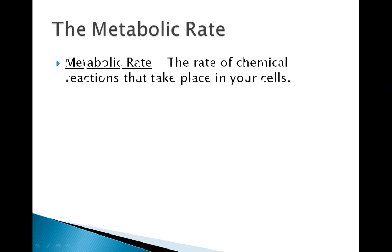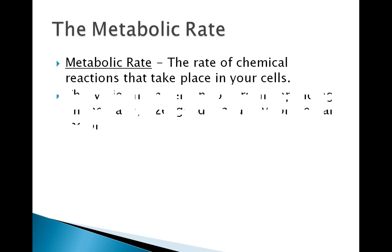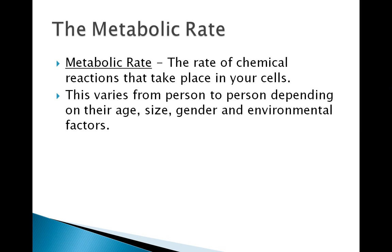Now the metabolic rate. The correct definition is: the rate of the chemical reactions that take place in your cells. This varies from person to person depending on their age, size, gender, and environmental factors. An athlete may have a greater metabolic rate because they have more muscle tissue, so they need to eat more food to supply the energy they need and their cell reactions take place faster. An obese man who does little exercise will have slower cell reactions, causing him to not burn off as much of the food he takes in.